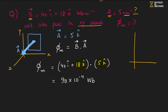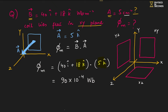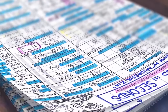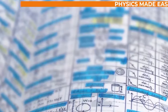Summary of vector areas for different planes: if the coil lies in the xy plane, vector area = Ak (along z-axis); if in the xz plane, vector area = Aj (along y-axis); if in the yz plane, vector area = Ai (along x-axis). Changing the plane changes the vector area direction, and this approach can be used to solve any such problem.